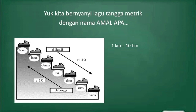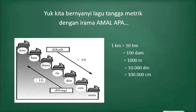Satu kilometer nilainya sama dengan 10 hektometer karena turun satu tangga. Satu kilometer sama dengan 100 dekameter karena turun dua tangga. Satu kilometer sama dengan seribu meter karena turun tiga tangga. Satu kilometer sama dengan 10 ribu desimeter karena turun empat tangga. Satu kilometer sama dengan seratus ribu sentimeter karena turun lima tangga. Dan satu kilometer sama dengan satu juta milimeter karena turun enam tangga.